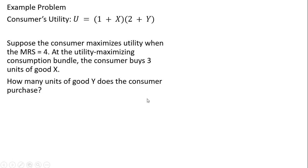How many units of good Y does the consumer purchase? So we know a few things. We know the consumer's utility function. We know that for this consumer to maximize utility, the marginal rate of substitution must equal 4. And we also know that the consumer is buying 3 units of good X. What we're trying to figure out is how many units of good Y does this consumer purchase?